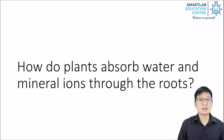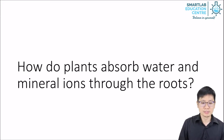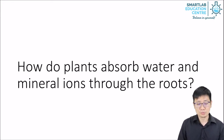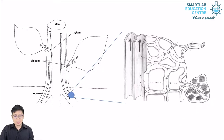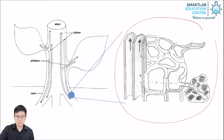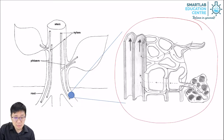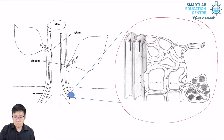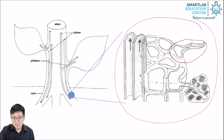Now we're going to discuss how plants absorb water and mineral ions through their roots. First, let's take a closer look at the root structure. On my right side we can see a 3D drawing representing the root's cross-section up to the xylem, showing the root cells and the xylem. Now this root cell over here is a special one — this is a root hair cell.